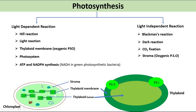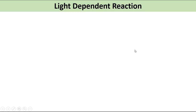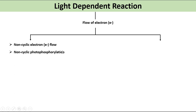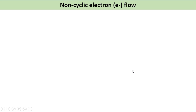In the light reaction, electron flow occurs in two forms. Non-cyclic electron flow produces ATP via non-cyclic photophosphorylation. Cyclic electron flow produces ATP via cyclic photophosphorylation. In non-cyclic electron flow, electrons move in a Z manner, so this is also termed the Z scheme.